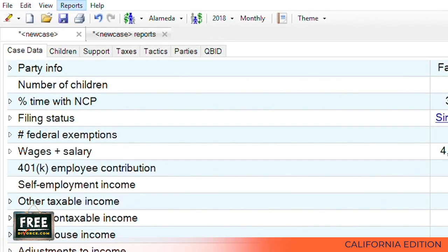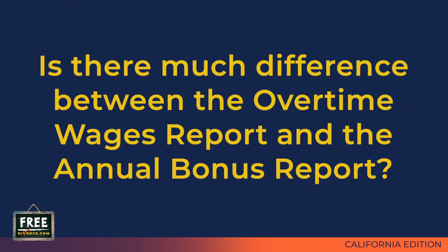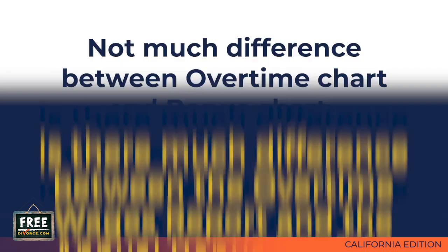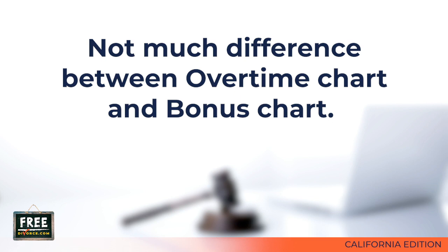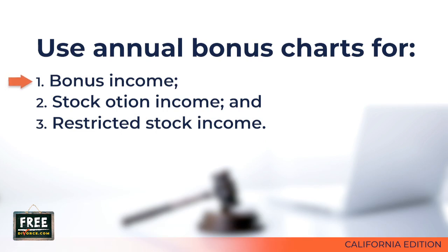Is there much difference between the overtime wages report and the annual bonus report? No — the reports look nearly identical, and for the vast majority of cases the overtime and bonus percentages on the two charts will be almost the same. It is usually not a problem to use either chart for both overtime pay and bonus pay. If you earn extra income from stock options or restricted stock units (RSUs), you can also use the annual bonus wages report to determine what percentage of that income should be paid as additional spousal support.